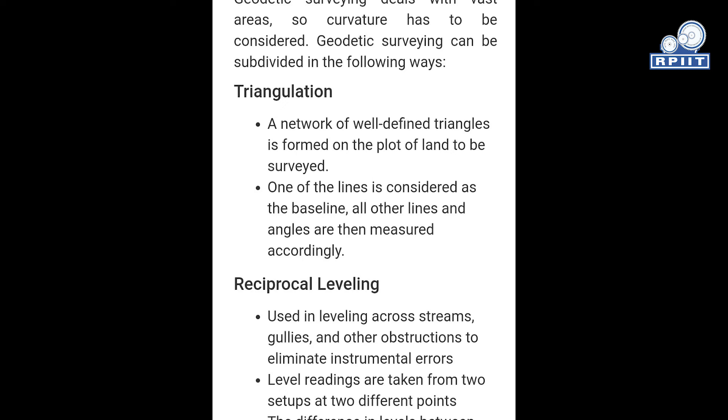Second is reciprocal survey. This type of survey is used in leveling across streams and other obstructions to eliminate instrumental error. In this type, level readings are taken from two stations at different points, and the difference in level between the two sides and obstruction are determined throughout this survey.